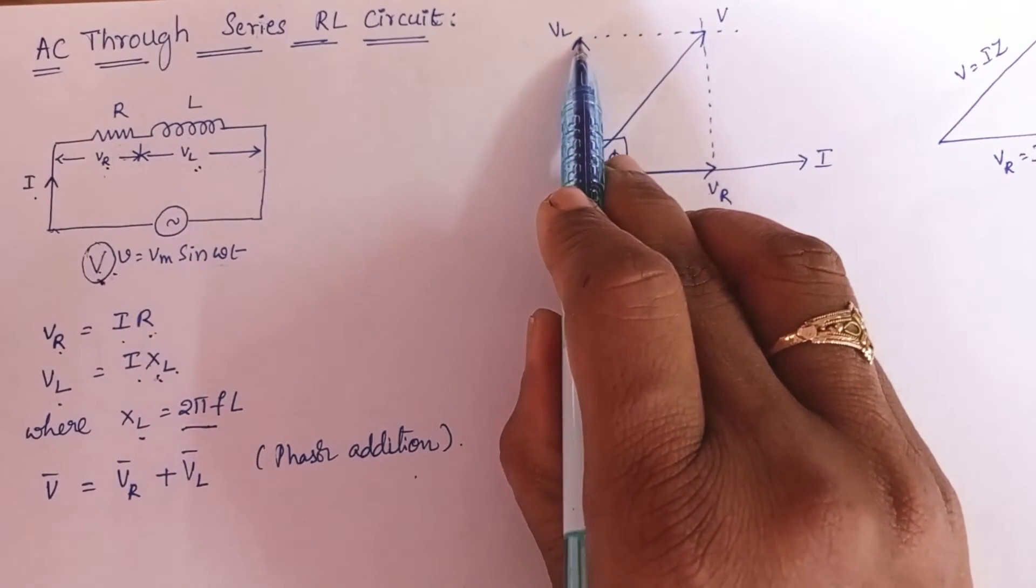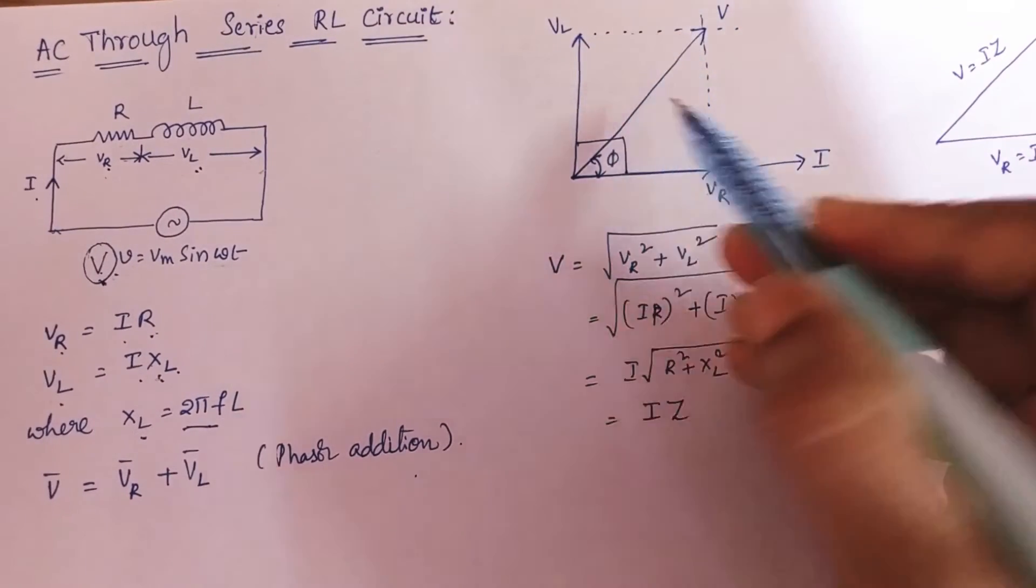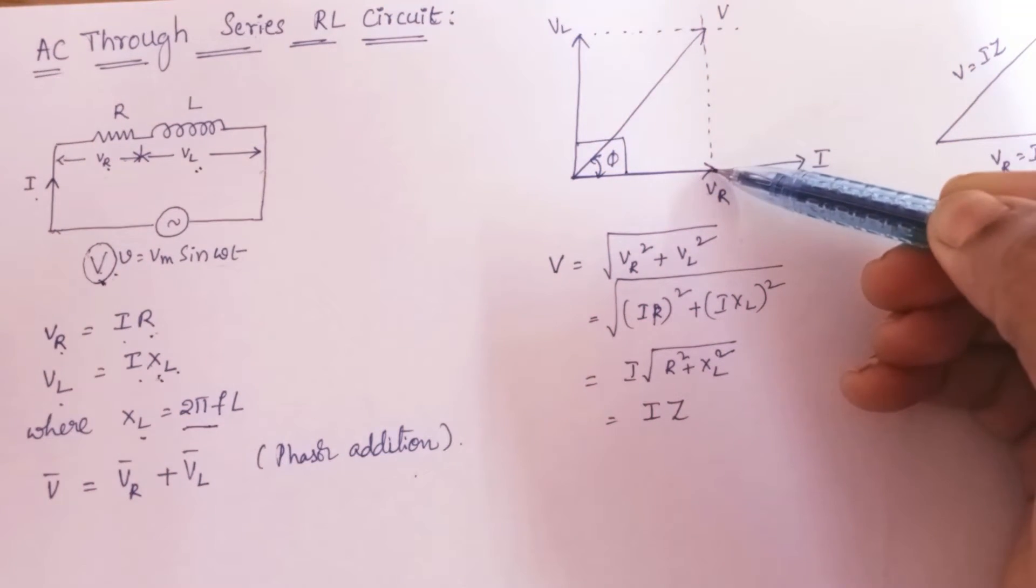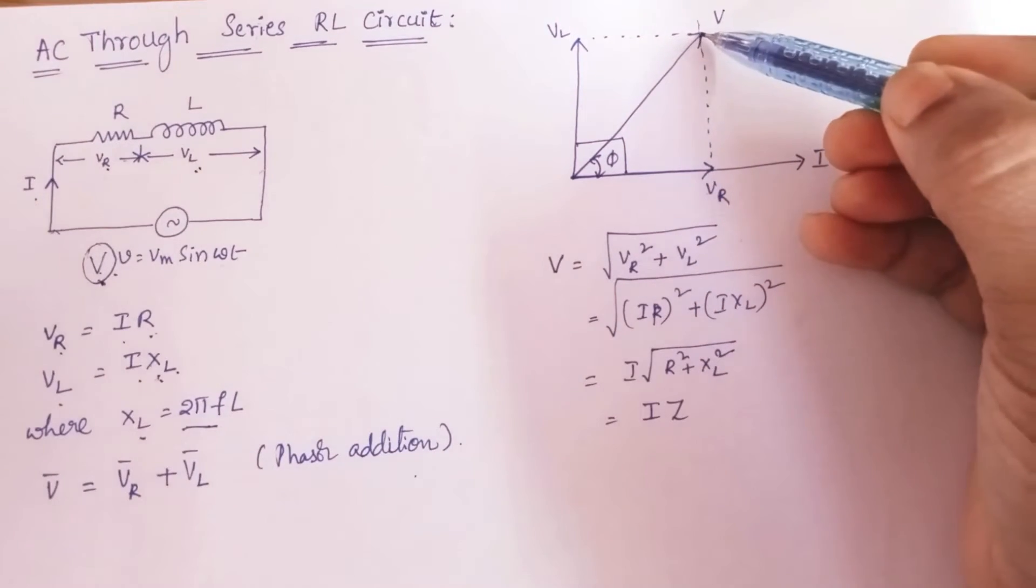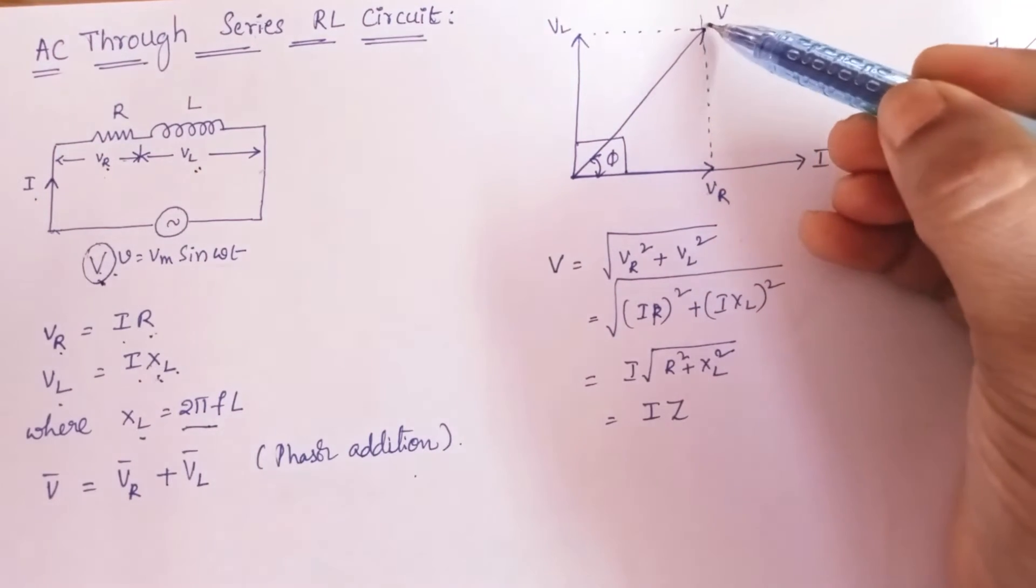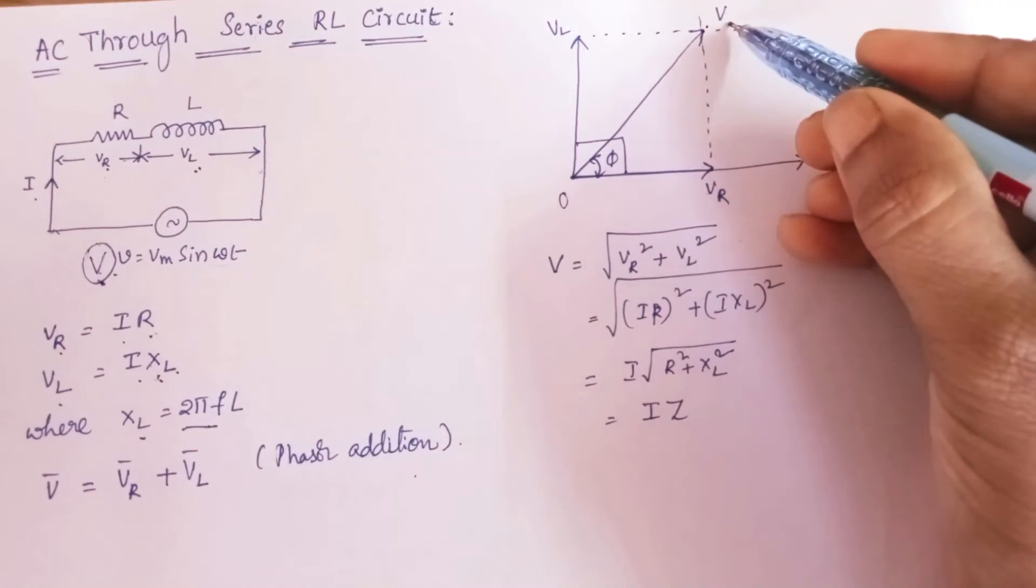So from the tip of Vl, draw a line which is parallel to Vr like this. And similarly, draw a line from this point in parallel with Vl. It will intersect at one point. So join that point with the origin. So this vector will be your supply voltage.